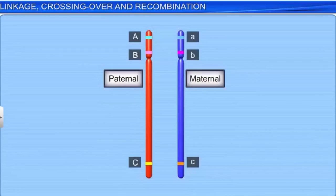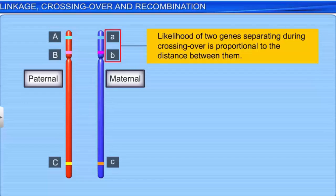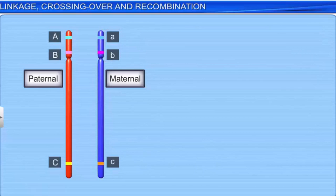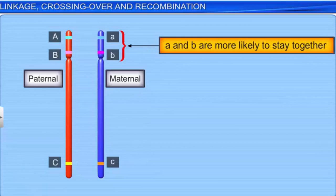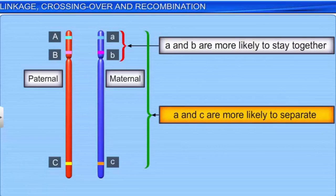Another fact discovered by Morgan and his colleagues was that the likelihood of two genes separating during crossing over was proportional to the distance between them. In other words, the closer the genes, the more likely that they will stay together, and the further they are, the more likely that they will separate.